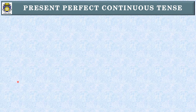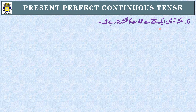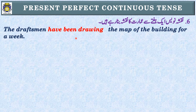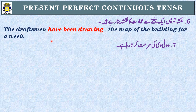Sentence 6: 'نقشہ نویس ایک ہفتے سے عمارت کا نقشہ بنا رہے ہیں۔' Identification: 'رہے ہیں' اور 'ایک ہفتے سے' — Present Perfect Continuous Tense۔ Subject: 'نقشہ نویس' یعنی draftsmen — plural — have been۔ The draftsmen have been drawing the map of the building for a week.